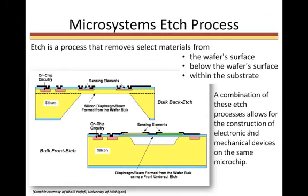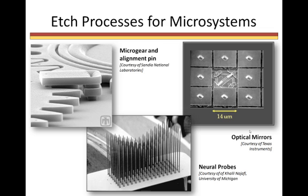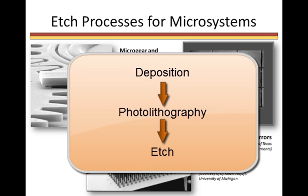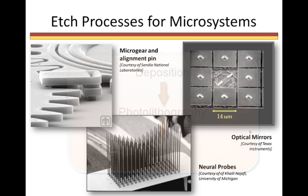Using different types of etching processes allows flexibility in constructing microsized devices and fabricating supporting electronic circuitry. The construction may consist of several different devices and layers. Material is deposited and removed several times during fabrication. It may be desirable to remove material at the wafer surface, below the surface, or within the substrate, all requiring different etch processes.